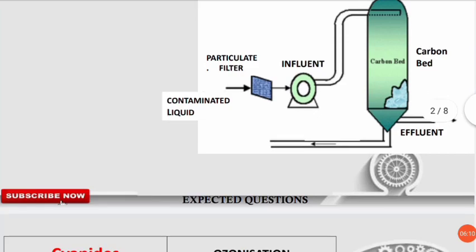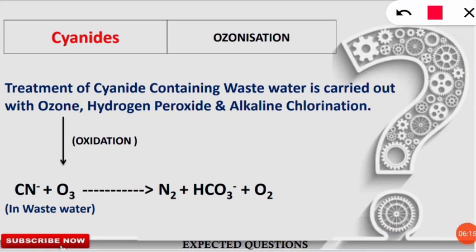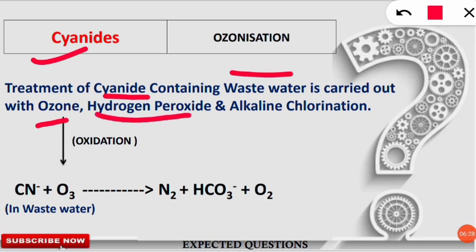Now let's move to the next slide. We will discuss the ozonization or ozonation technique used to remove cyanides present mostly in wastewater. The treatment of cyanide-containing wastewater is carried out with the help of ozone. You should also note that hydrogen peroxide and alkaline chlorination are also used to remove cyanide from wastewater. The cyanide ion CN⁻ present in the wastewater is attacked by the ozone molecule.